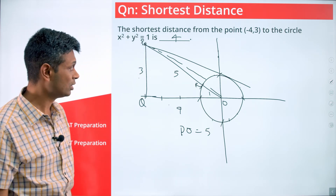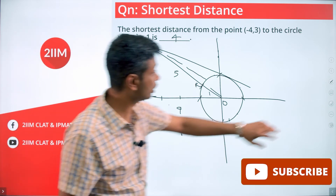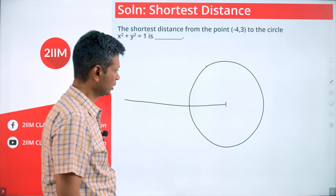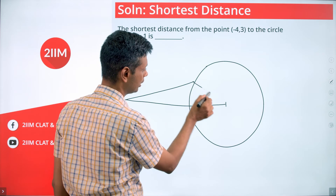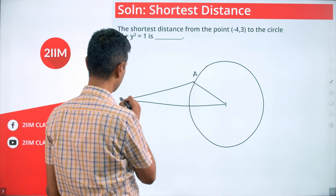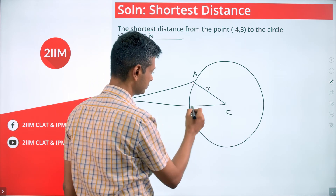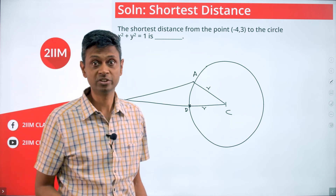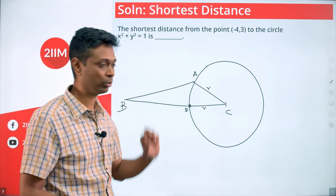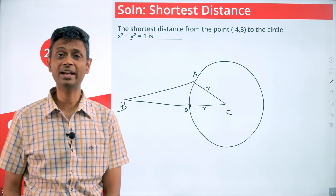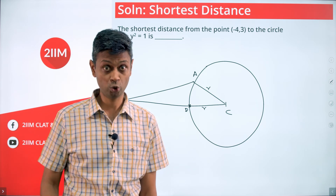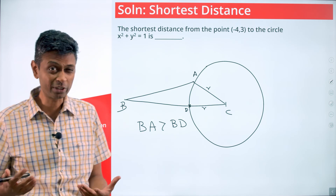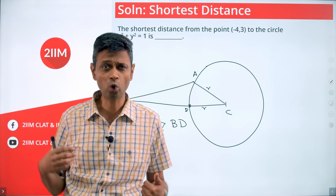Now I'll think about why that line should be the shortest — I'm not going to give you the full answer, just a starting point. Draw a circle, and from a point outside draw a line to the center. Now draw another arbitrary line to some other point on the circle, forming a triangle. Call the points: A is the outside point, B is the center, C and D are points on the circle. CA and CD are radii. We want to prove BD is less than BA — that BA is longer than BD for any arbitrary point A. Use the idea that the sum of two sides of a triangle is always greater than the third side, and prove that BD is the shortest. It seems intuitive, but figure out the formal proof.